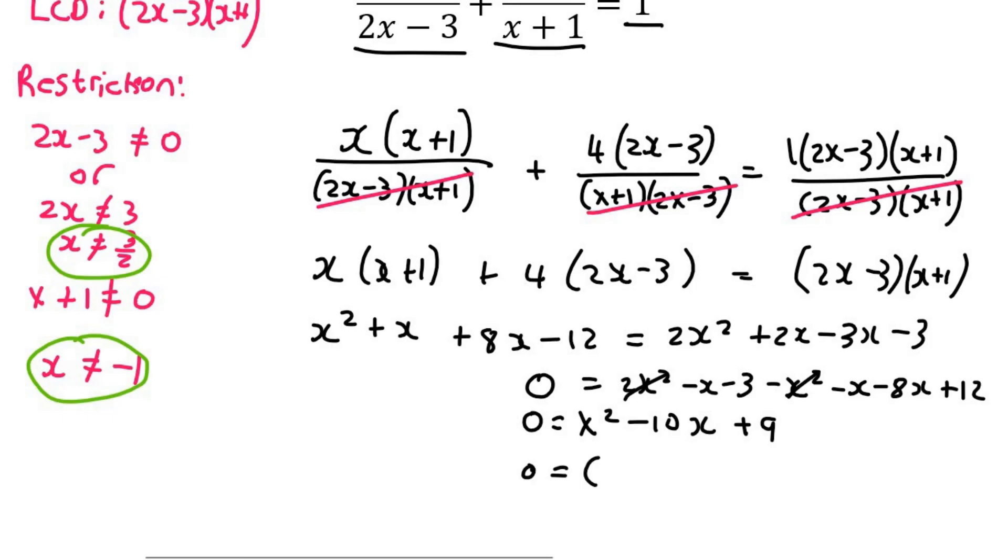We could factorize this as x minus 9 and x minus 1. And so therefore x will be 9 or x can be equal to 1. Now that's not the same as the restrictions, and so we are all good. That is our answer.